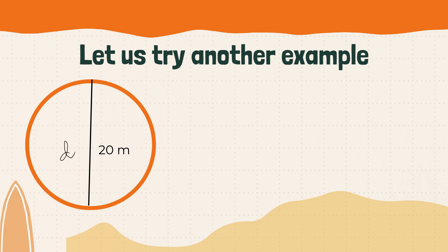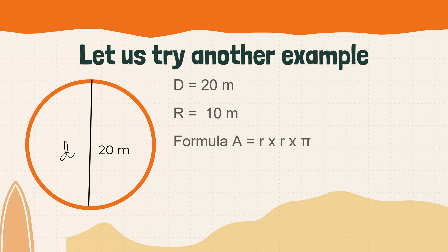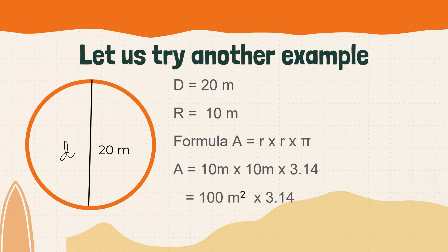Let us try another example. The given is a diameter of 20 meters — it is a full circle. So therefore, the radius, which is half of the diameter, is 10 meters. After finding the radius, we use the formula A equals r times r times pi. Substituting: A equals 10 times 10 times 3.14. Ten times 10 equals 100 square meters. 100 times 3.14 is equivalent to 314 square meters. That is the area of the circle.